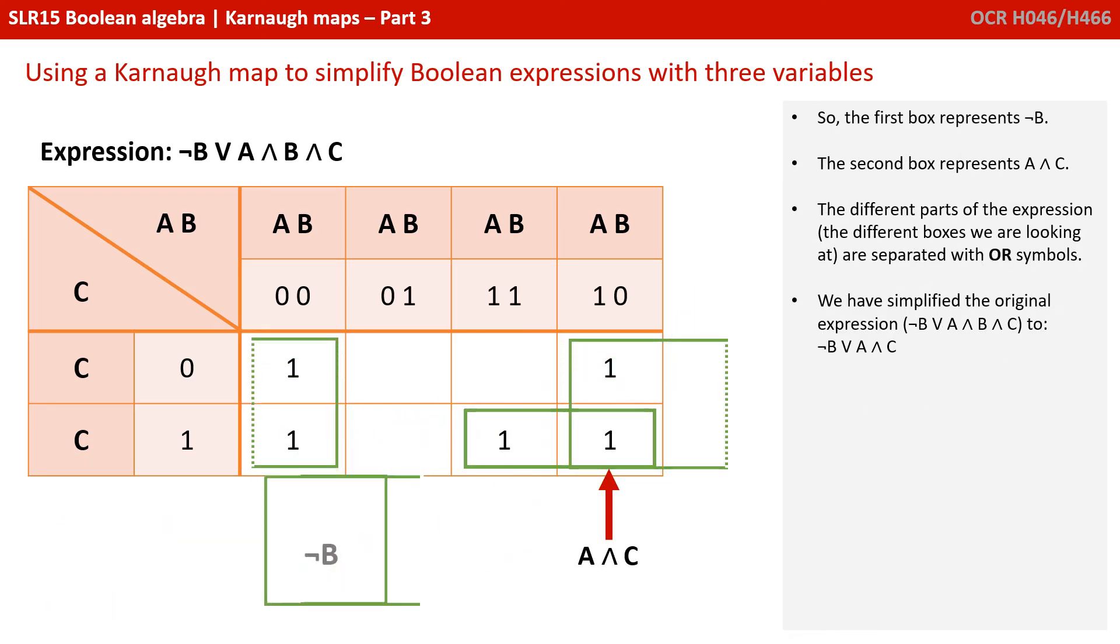So the first box represents NOT B. The second box represents A AND C. And the different parts of the expression, the different boxes, are separated with OR symbols. We've simplified the original expression NOT B or A AND B AND C to NOT B or A AND C.